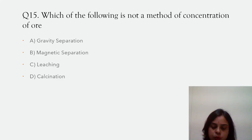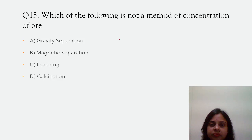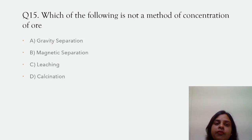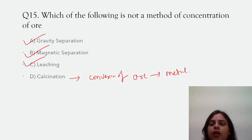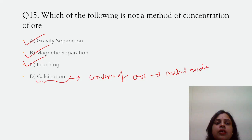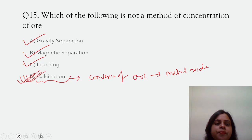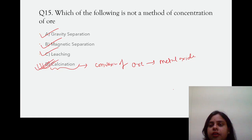Which of the following is NOT a method of concentration of ore? There are different processes in metallurgy — first is grinding, then concentration of ore. Methods of concentration include gravity separation, magnetic separation, and leaching. Calcination is the conversion of ore into metal oxide, so it does not come under concentration of ore. The correct answer is calcination.